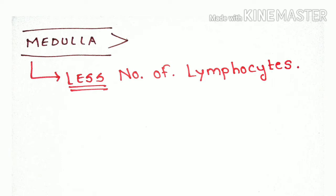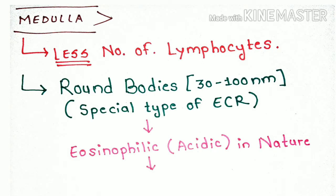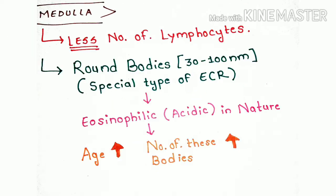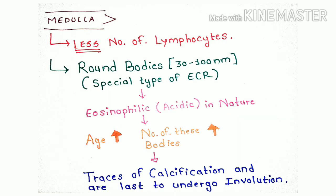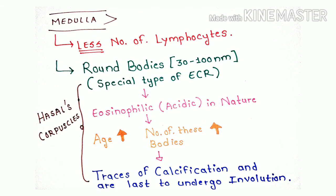Now let's learn more about the medulla. Firstly, the medulla has fewer lymphocytes. Special round bodies, about 30 to 100 micrometers in size, are found in the medulla. These are a special type of epithelial reticular cell. They are eosinophilic — meaning acidic in nature — and their number increases with age. These bodies have no well-known function, but traces of calcification are observed, and they are the last to undergo involution. Involution is the shrinkage of the thymus and replacement of parenchyma with fibrofatty tissue. These bodies are called Hassall's corpuscles or Hassall's bodies.